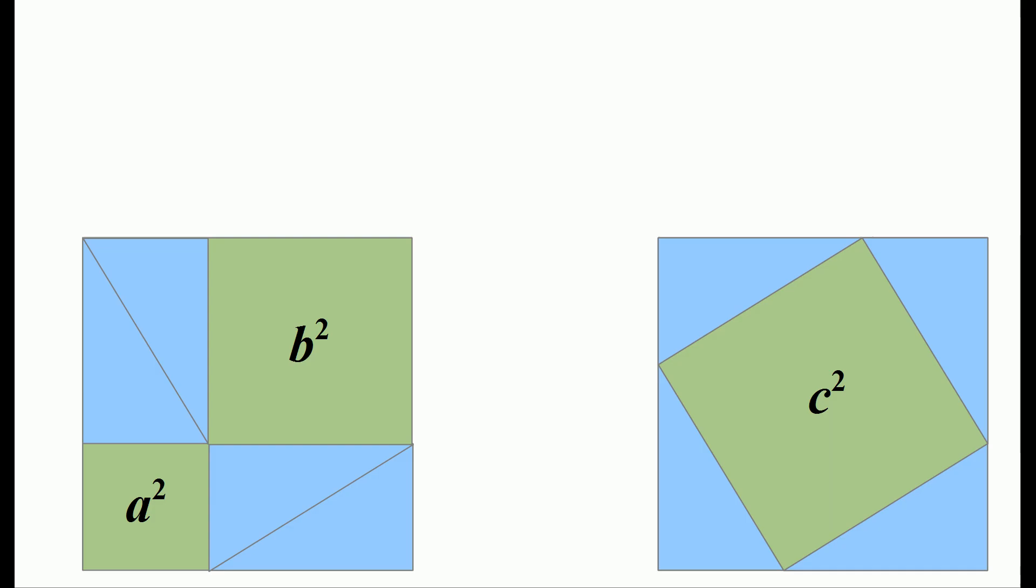Now comes the insight. We started out with two identical squares in which we placed four copies of the same triangle. So that means, since the blue areas are equal, and the original squares were equal, therefore, the remaining green areas must be equal.